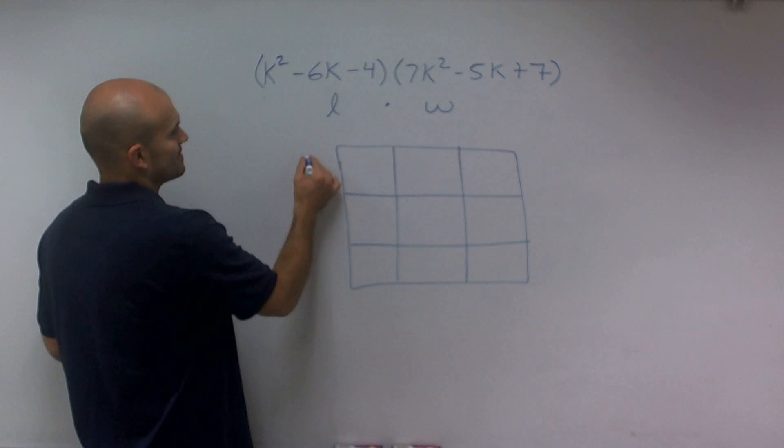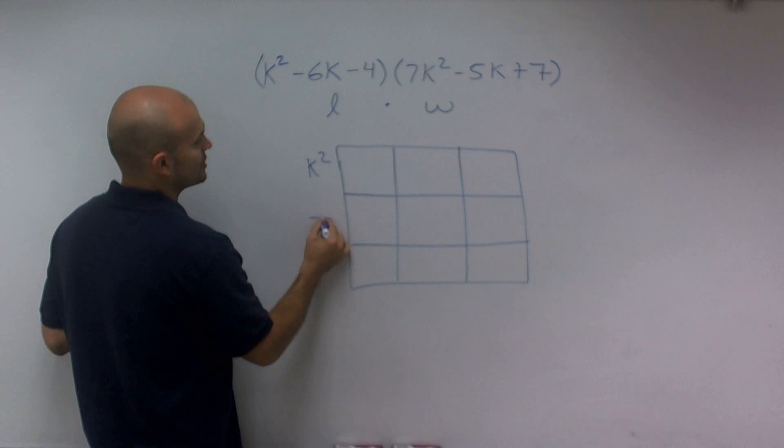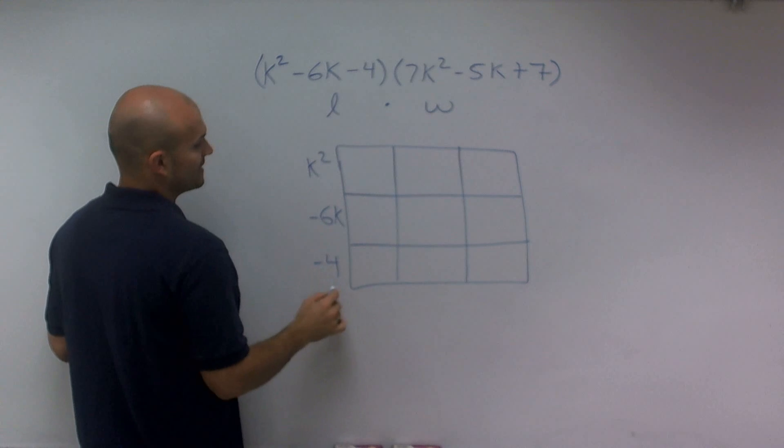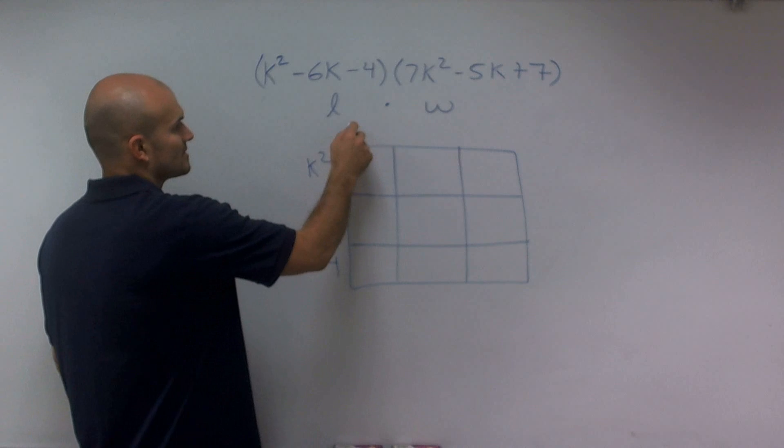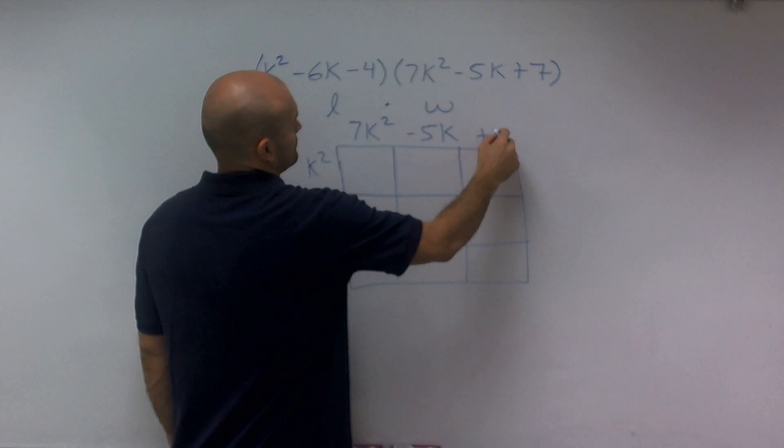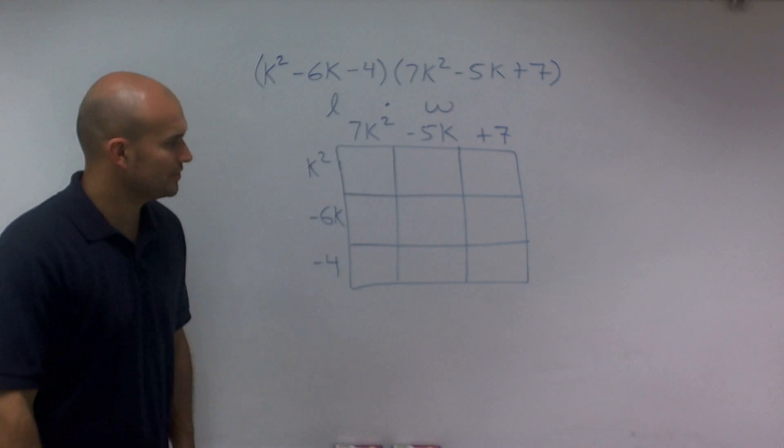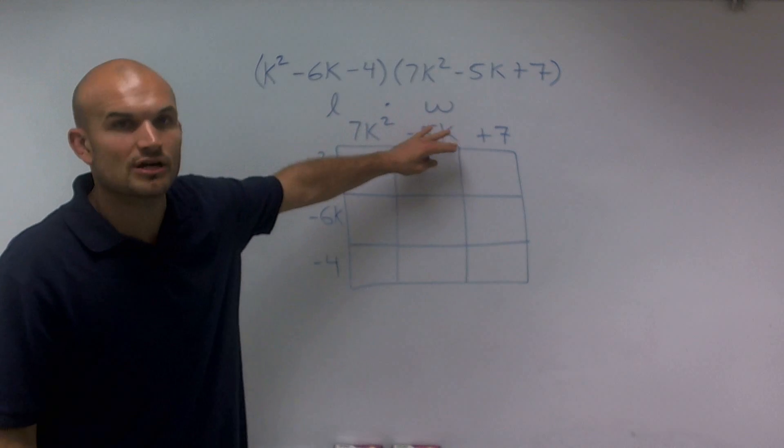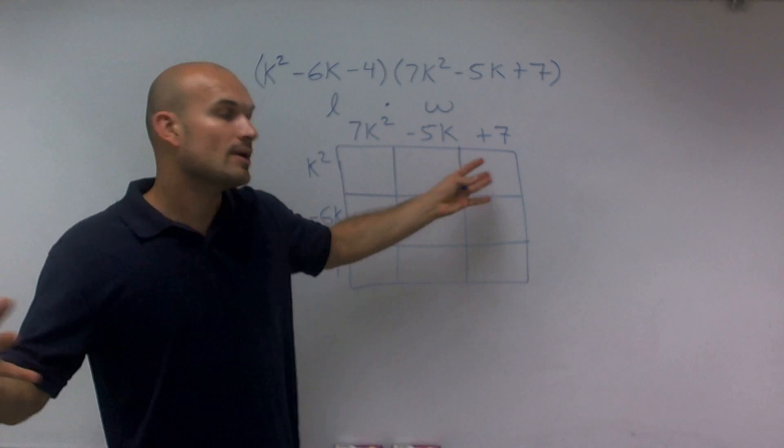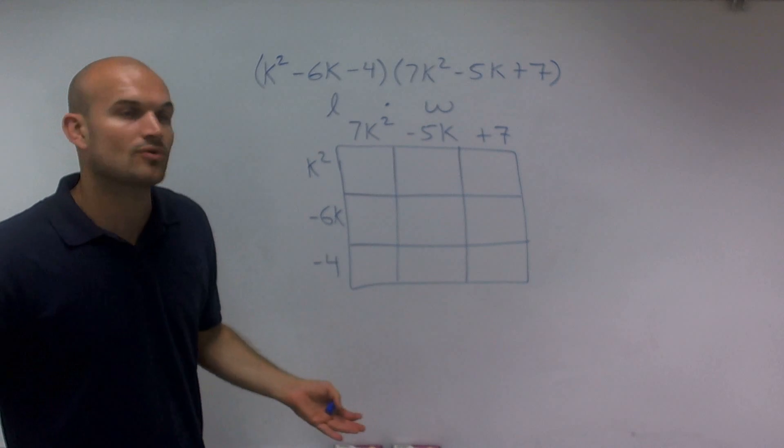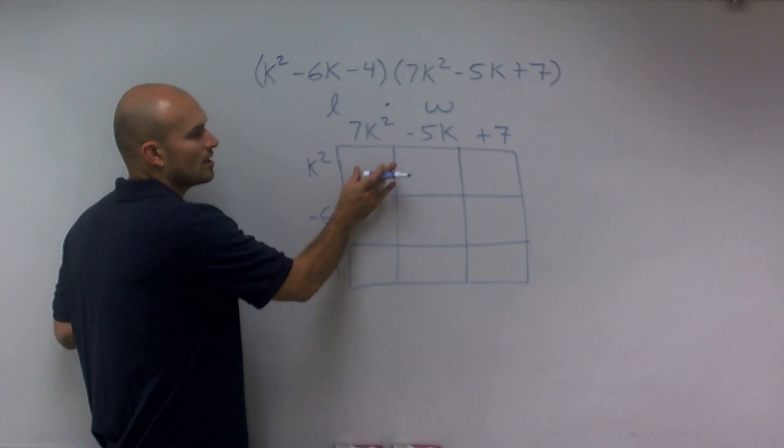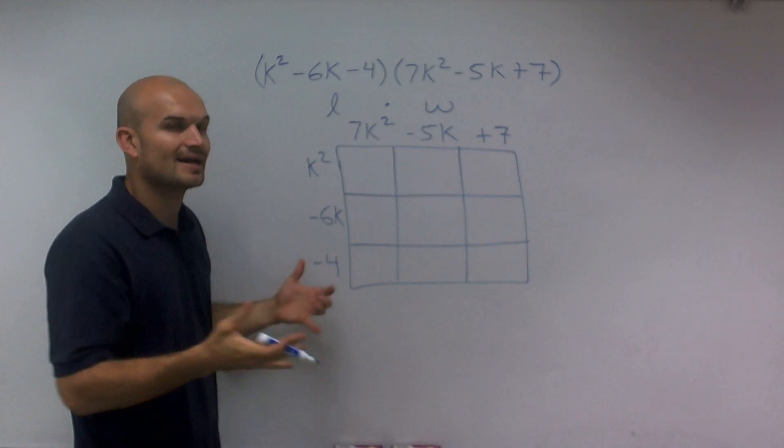So now what I'm going to do is I'm just going to write these out, make sure I keep the value or the sign of each one of those terms with it. Now that I have each one of my terms and I represent them as a length and a width of a rectangle, I can just multiply to find the area of each one of these rectangles, then I can combine them up.